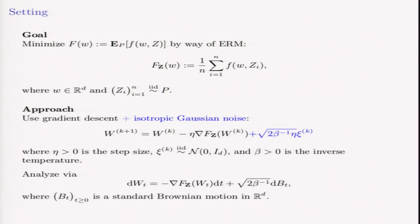There are many ways to do this, and as you've also heard this morning, one nice way is gradient descent or SGD plus noise for escaping local minima. The Langevin algorithm adds isotropic Gaussian noise.